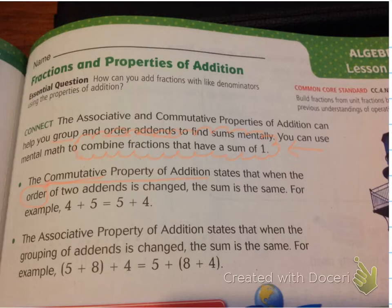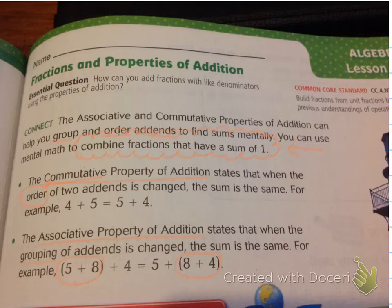Now let's check out the associative property. The associative property of addition states that when the grouping of addends is changed, the sum is the same. For example, five plus eight plus four equals five plus eight plus four — the only thing that changed was how they grouped them, what they wanted to add first and second. So when I think of associative property of addition, I think of grouping. And you group numbers using parentheses.